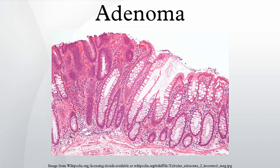Parathyroid: an adenoma of a parathyroid gland may secrete inappropriately high amounts of parathyroid hormone and thereby cause primary hyperparathyroidism. Liver: see hepatocellular adenoma. Hepatic adenomas are a rare benign tumor of the liver, which may present with hepatomegaly or other symptoms.